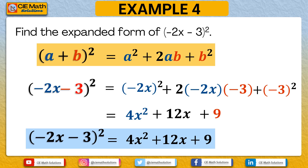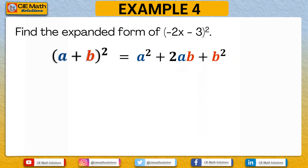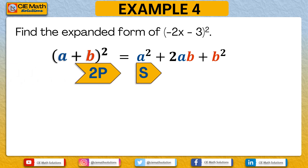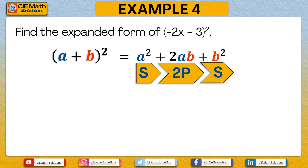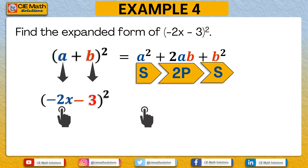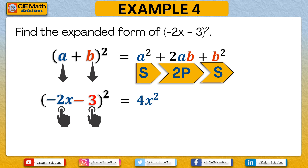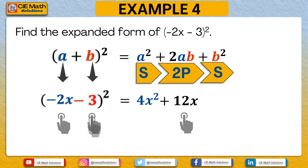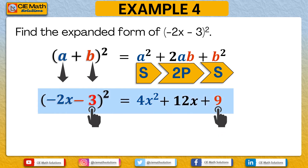Using the faster S-2P-S method, with a equal to negative 2x and b equal to negative 3: S is the square of negative 2x, giving 4x squared. 2P: 2 times negative 2x times negative 3 gives positive 12x. And S: negative 3 raised to 2 equals positive 9. Therefore, negative 2x minus 3 squared equals 4x squared plus 12x plus 9.